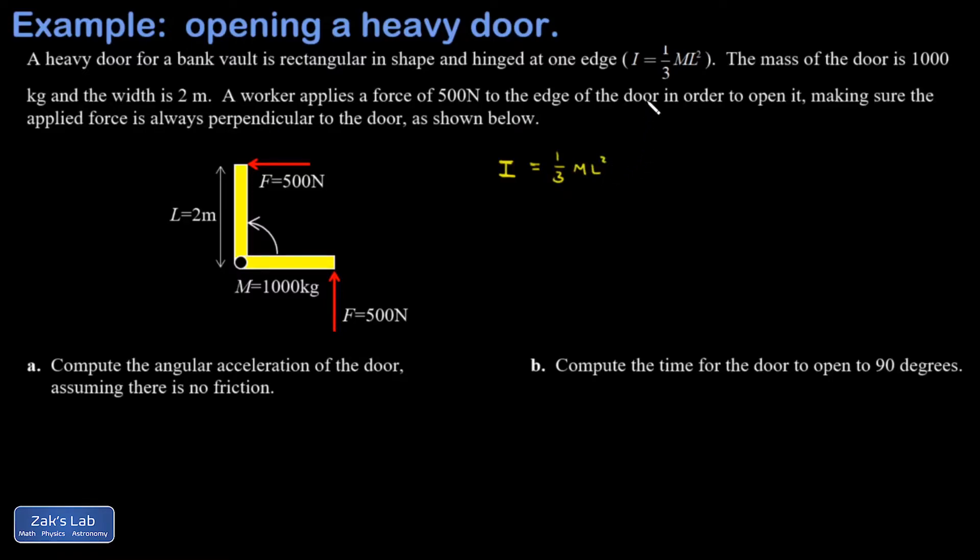So I get 1/3 times 1,000 times 2 meters squared, and this gives me 1,333 kilogram meters squared.